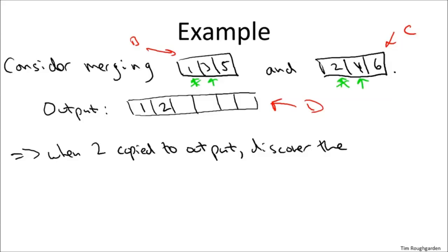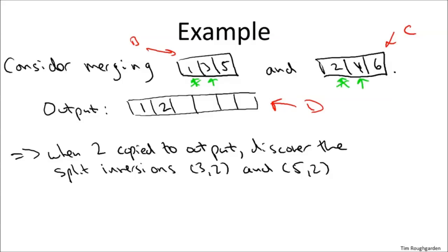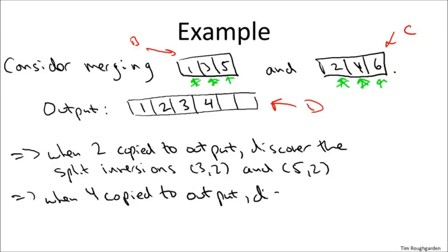There are two elements remaining in B — those are the two split inversions involving element 2. Next we make a copy from the first array, and nothing interesting happens with respect to split inversions when we copy from B. Then we copy the 4 over, and again discover a split inversion: (5, 4). The reason is the same — 4 was copied over before what's left in B, so it's smaller than it, but by virtue of being in the right array it has a bigger index, so it's a split inversion. The rest of the merge subroutine executes without incident: 5 gets copied over (boring, from the left array), and 6 is copied over from the right array, but since the left array is empty, there are no split inversions involved.